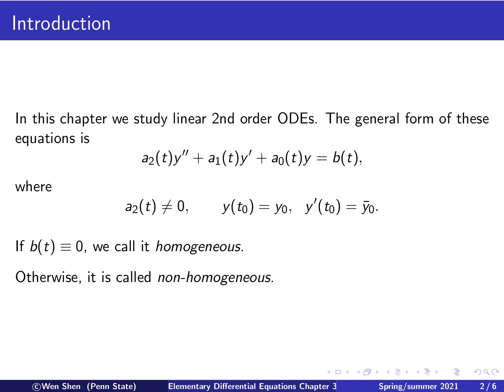One more term to be specified, which we will see is very important later on, is the b(t) term on the right-hand side of the equation, that is not involved with y. If b(t) is identically zero, then we call this equation homogeneous. Otherwise, if b(t) is not identically zero and is some function of t, then this is called non-homogeneous.